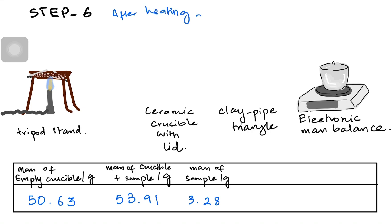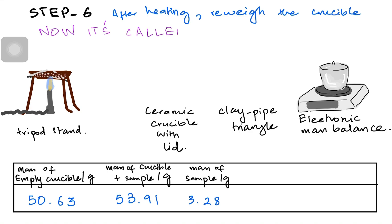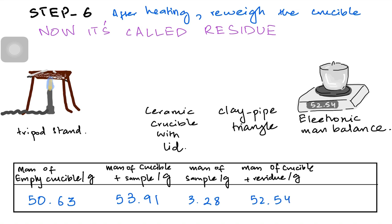In step 6, we allow the crucible to cool and then measure its mass again. After heating, we weigh the crucible to find how much water was lost. The heated product is now called the residue — not the sample — because it has lost its water of crystallization and its chemical identity has changed. We record the mass of crucible plus residue, which turned out to be 52.54 grams.